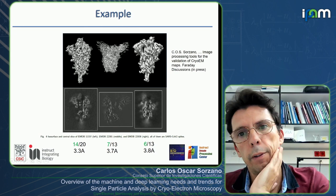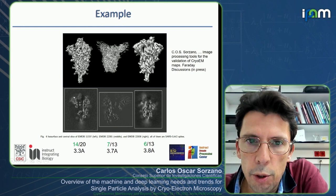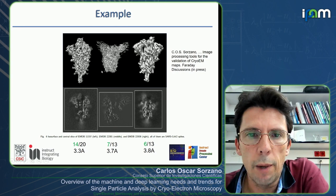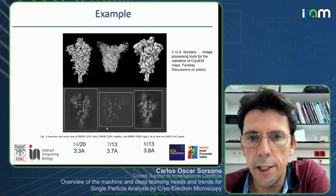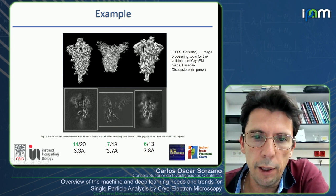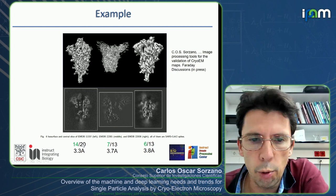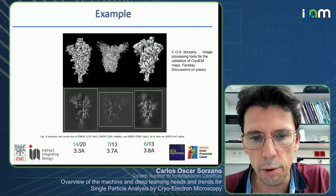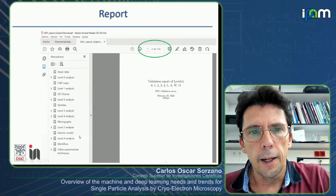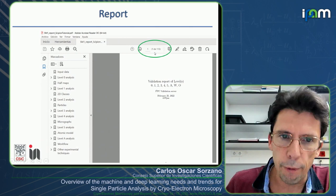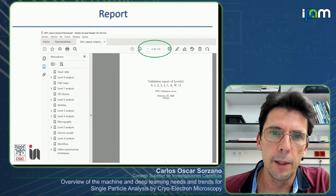Here is an example of three different reconstructions of the same molecule — the spike of the SARS-CoV-2 virus — all claiming similar resolutions of 3.3, 3.7, and 3.8 Ångströms. Yet the appearance of those maps is completely different. Going through the server, two of them only pass seven and six tests out of 13 respectively, while ours passes 14 out of 20. The report can be very detailed — up to 113 pages — and can identify any pathology in your map.